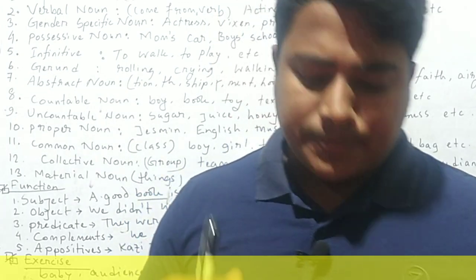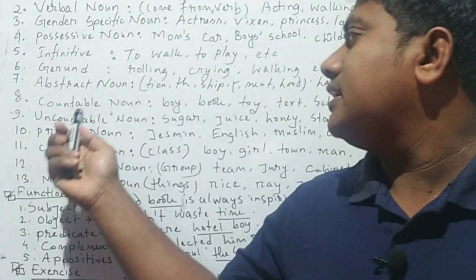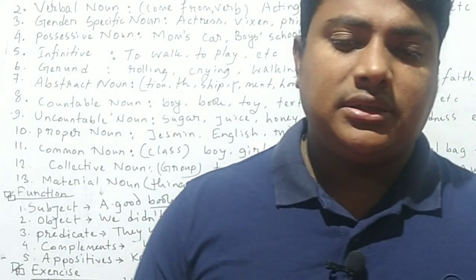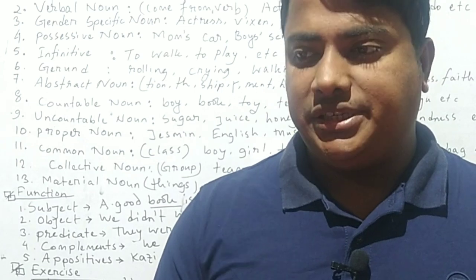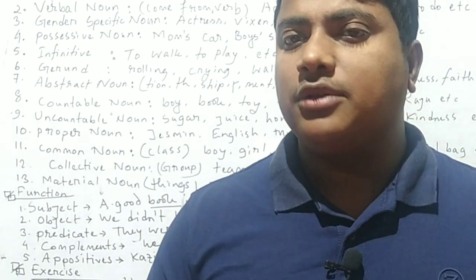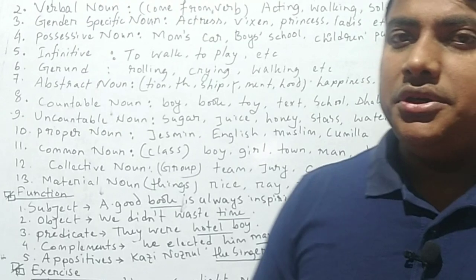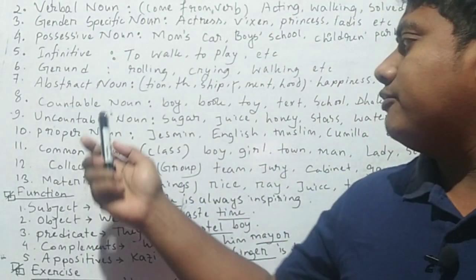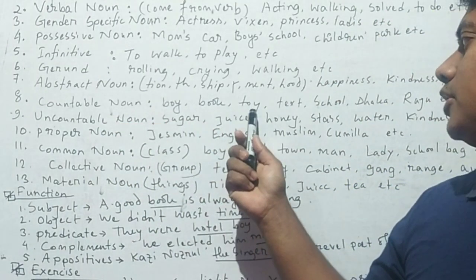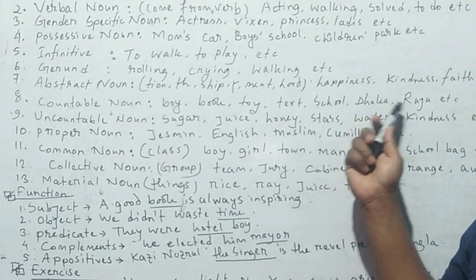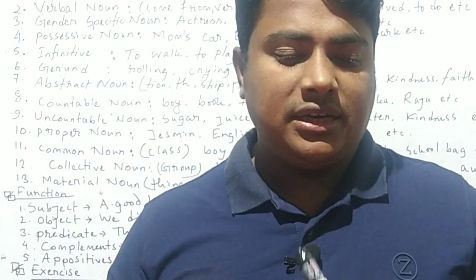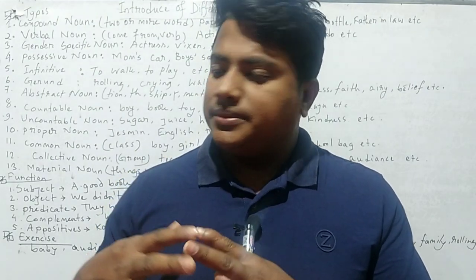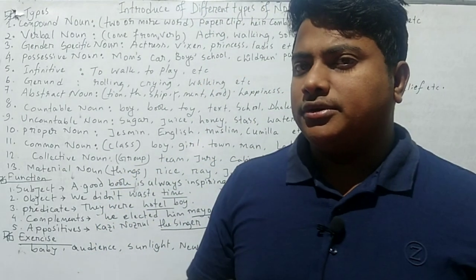Some nouns are known as countable nouns — these are words or things that can be calculated or counted. In English grammar, most nouns are countable. For example: boy, book, toy, text, school, etc. These are nouns that can be measured and counted, so they are countable nouns.